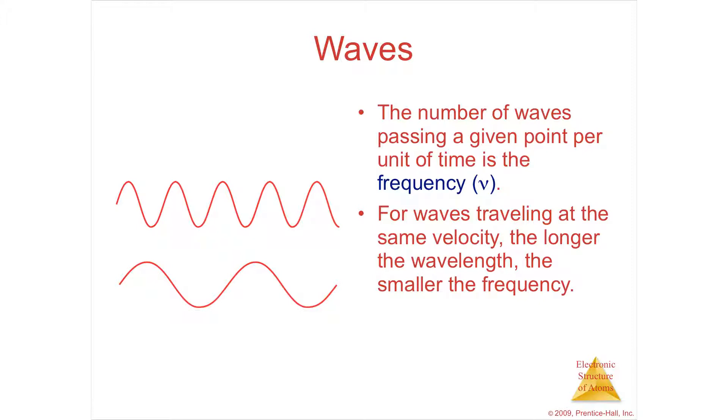If you notice the picture on the left, if you have more cycles in a certain bit of time or a certain distance, then the wavelength actually shortens. So the frequency, how frequent something is traveling, is inverted or an inverse relationship to the wavelength.